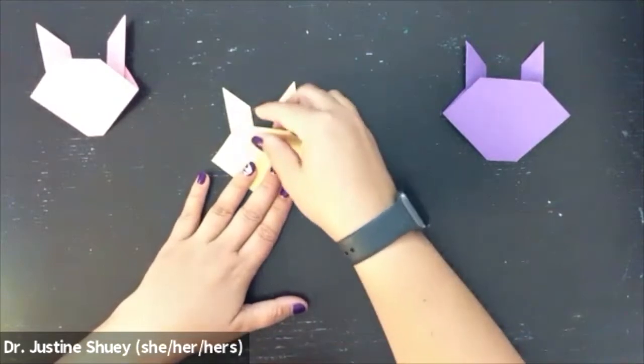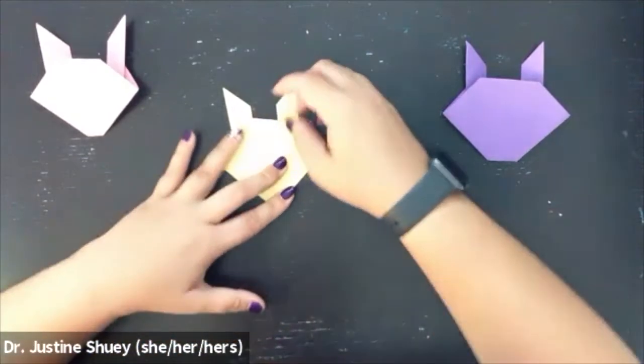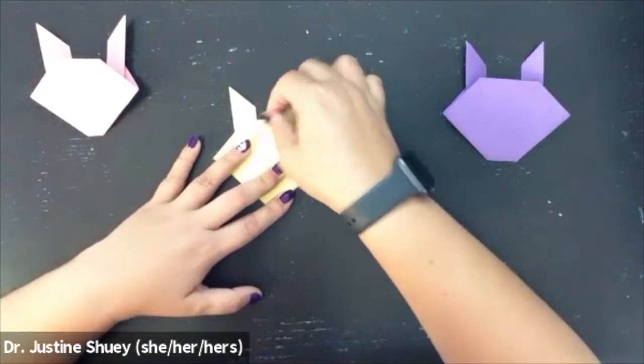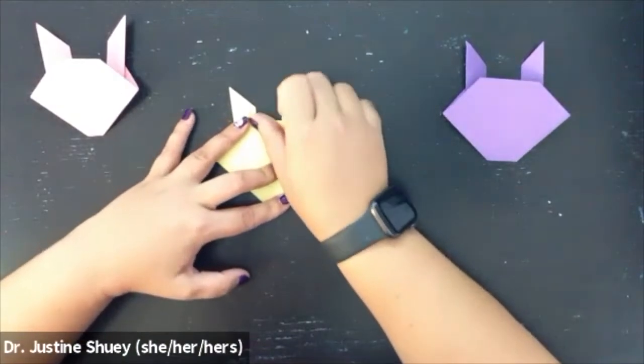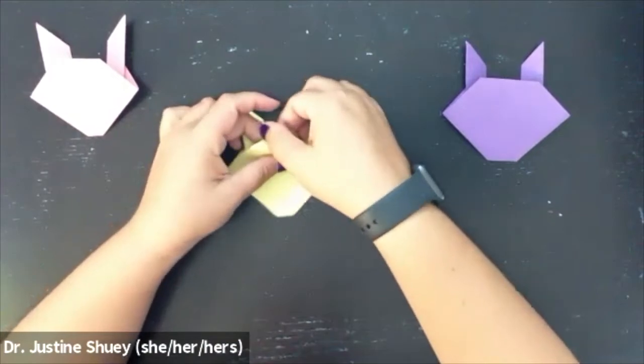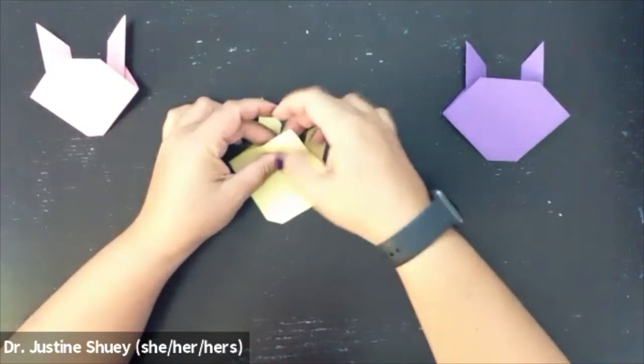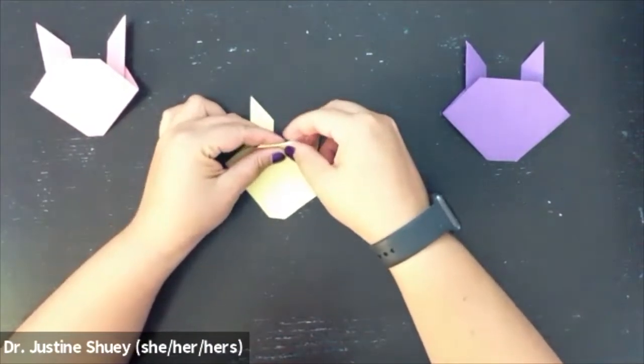Fold the top back and try to get it sort of straight. And that's going to be folded behind and then we're going to have our rabbit.